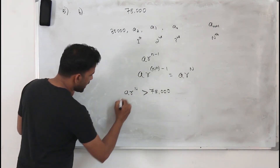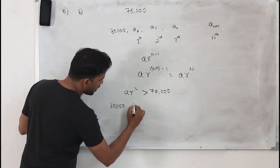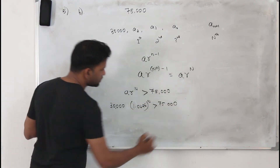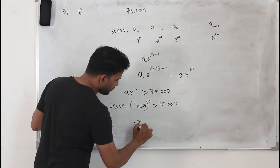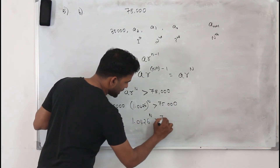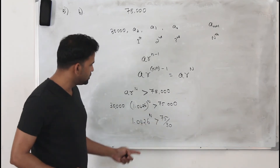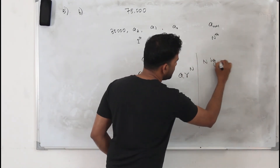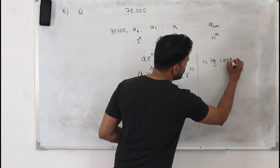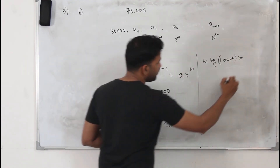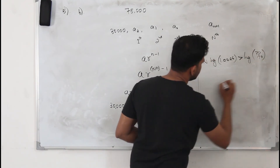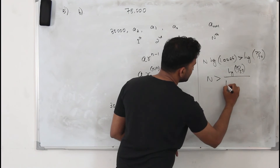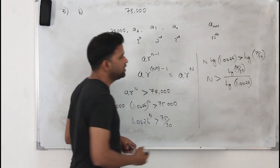So 30,000 × 1.0426^N > 75,000. Divide both sides by 30,000: 1.0426^N > 75/30. Take logarithm on both sides: N·log(1.0426) > log(75/30). Therefore N > log(75/30) ÷ log(1.0426). Calculate this using your calculator.